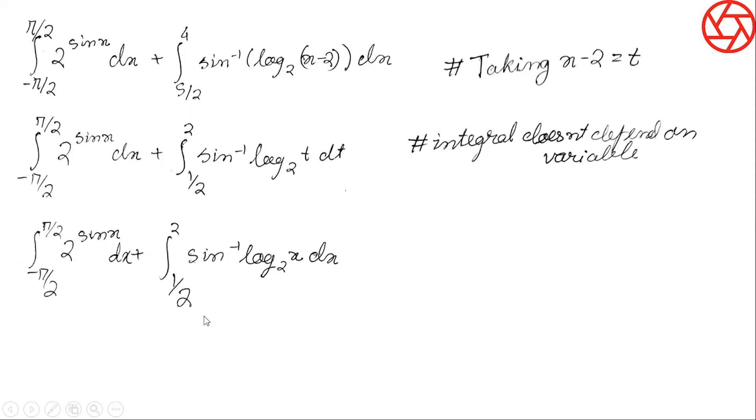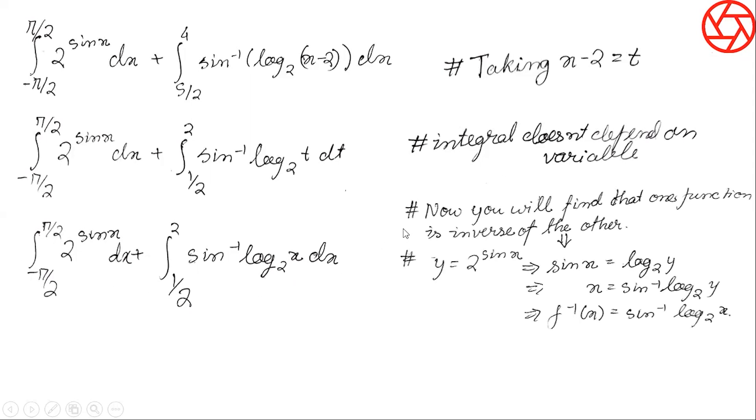Now you can easily see that 2 to the power sin X is the inverse of sin inverse of log X to the base 2. These two functions are inverse of each other. You can verify this as well. Like Y equals 2 to the power sin X. Do calculate it before concluding that both of them are inverse of each other. So here, Y equals 2 to the power sin X. Taking log either sides to the base 2, here you would be ending up with sin X. Here it would be log Y to the base 2. Now taking sin inverse either sides, sin inverse of sin X is X, and here it is sin inverse of log Y to the base 2. Since X equals sin inverse of log Y to the base 2, F inverse of X equals sin inverse log X to the base 2.